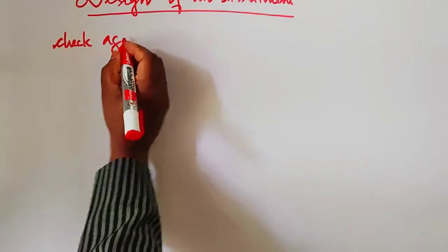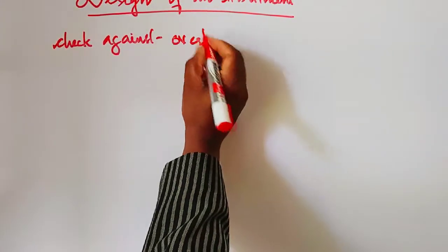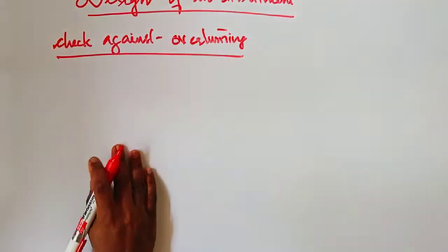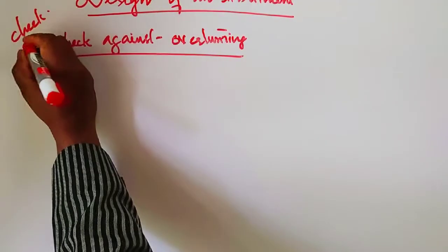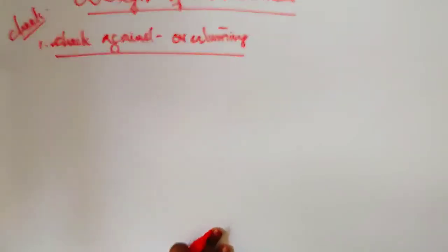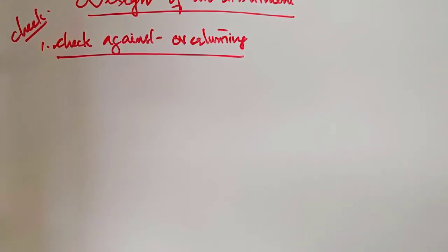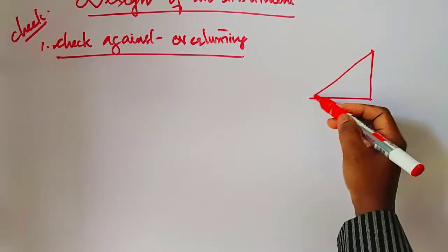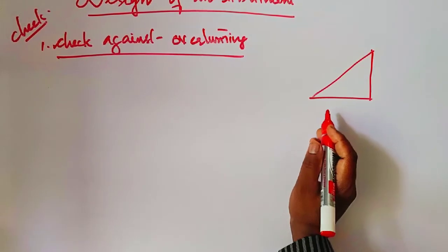The first check is against overturning. An abutment must be safe against overturning, sliding, and maximum base pressure. Here is the figure of the abutment for reference.